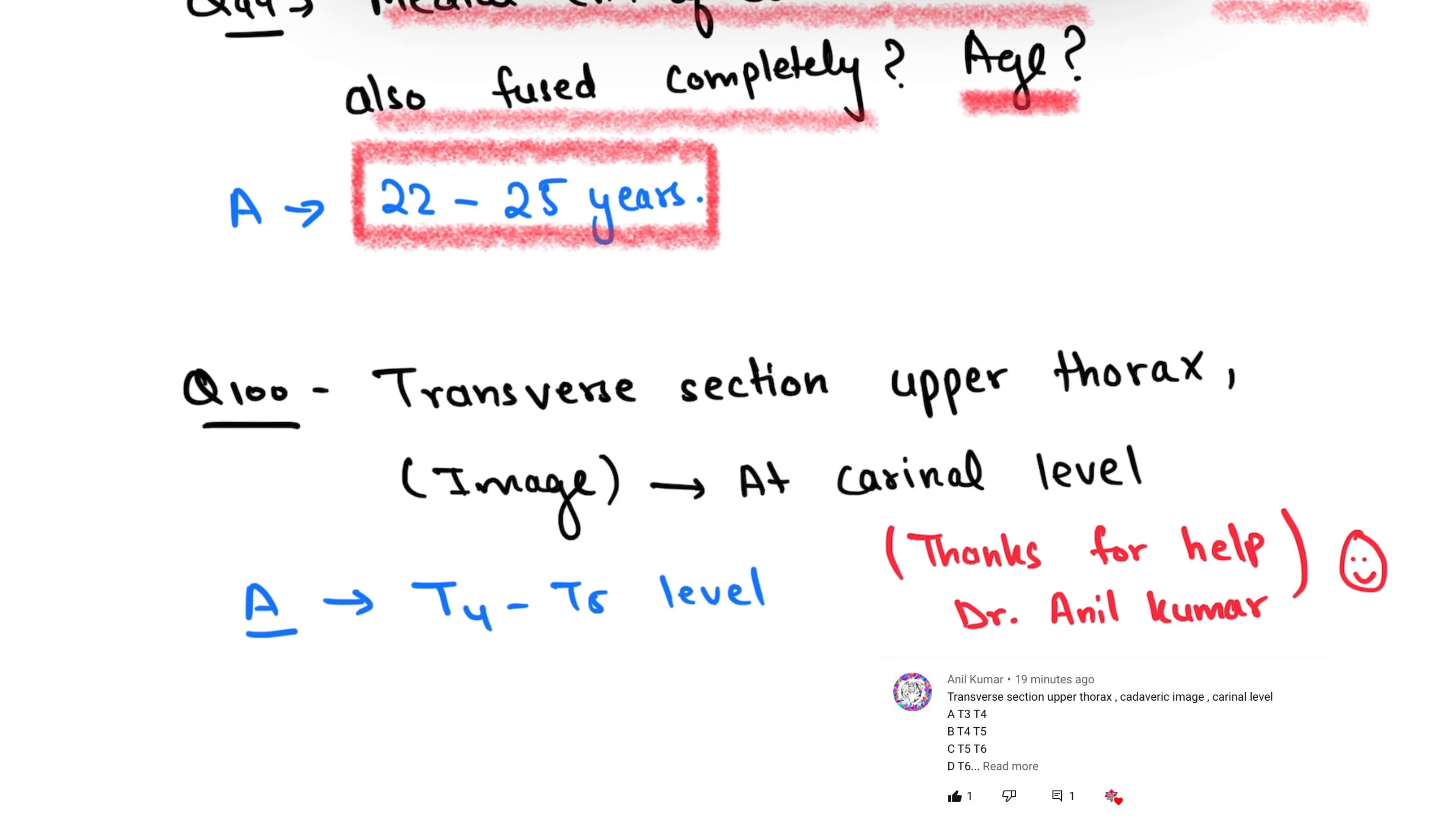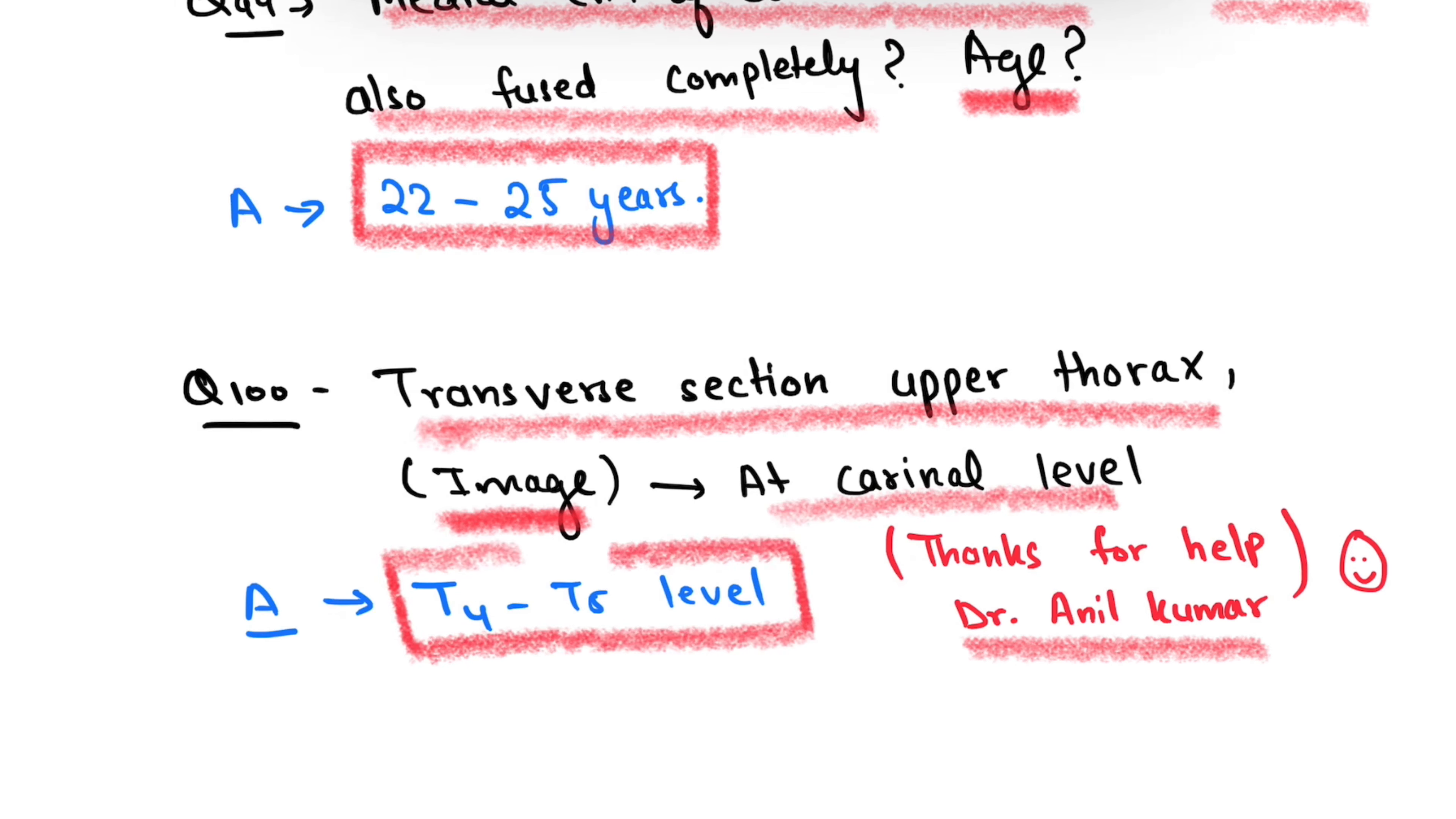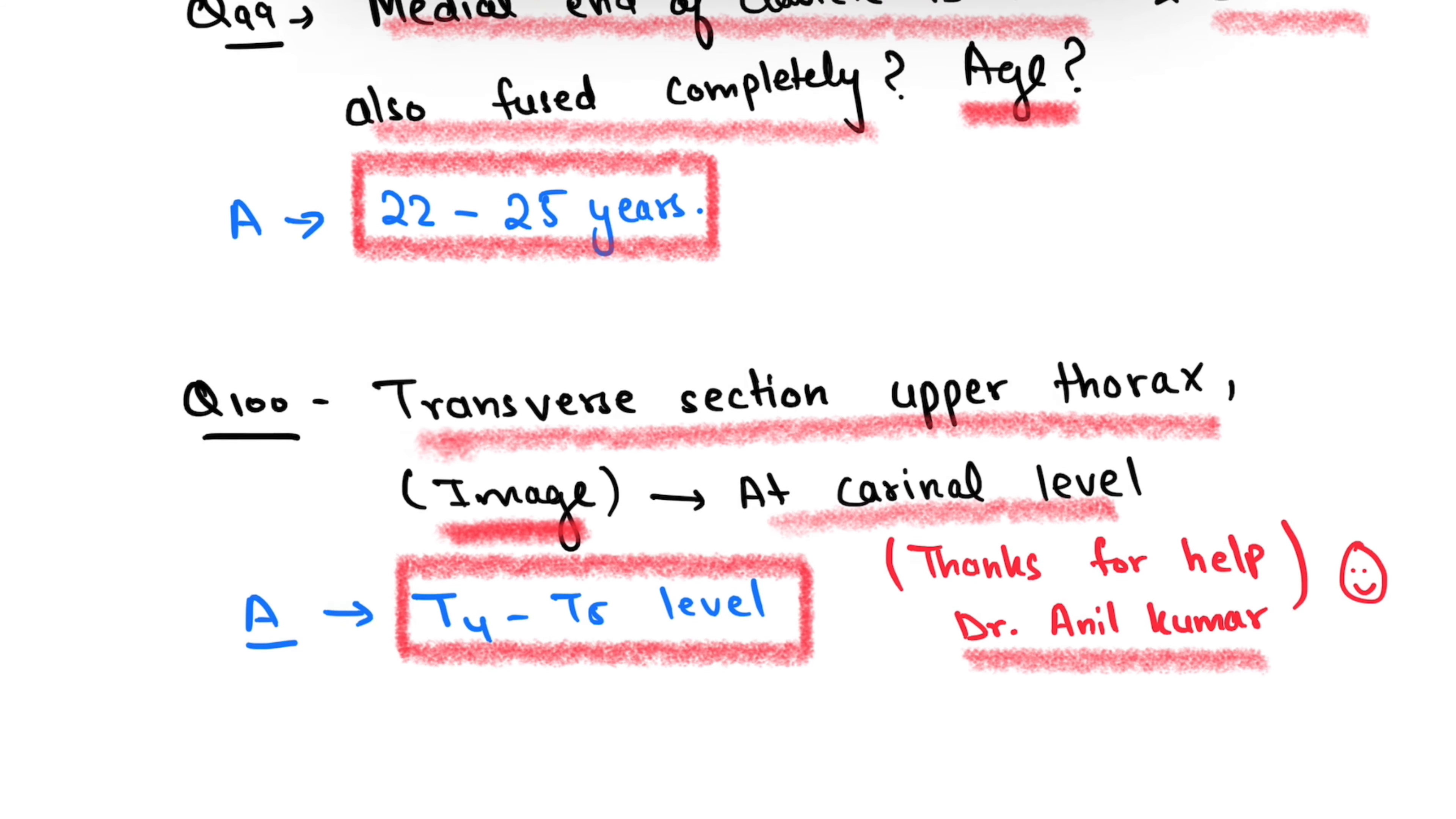The last question - I'd like to thank again Dr. Anil Kumar for his contribution. The question is: an image was given in which transverse section of upper thorax was shown at the carinal level. It was at T4 to T5 level. So this is all for this video. I'm solving more questions for you.